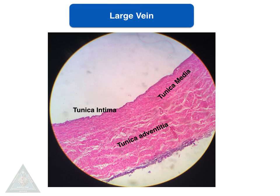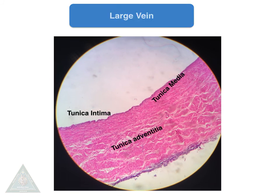This is a microscopic slide showing tunica intima, media, and adventitia in a large vein. As you can see, the adventitia has a lot of smooth muscle fibers to allow blood to flow against gravity.